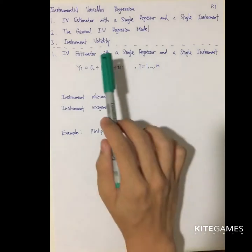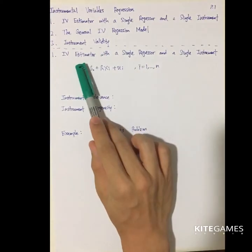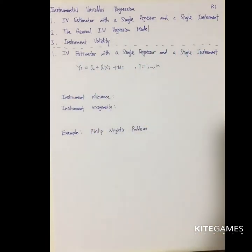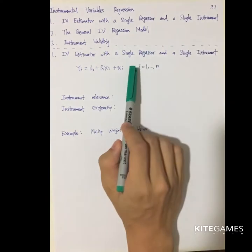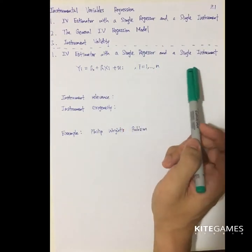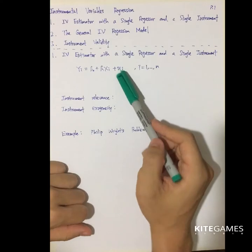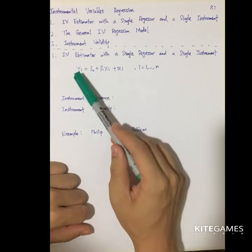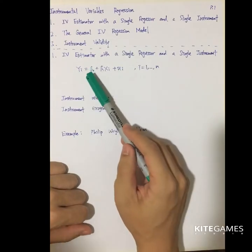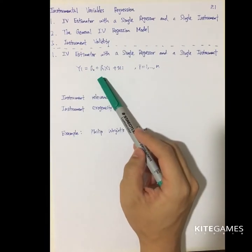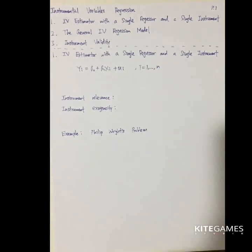Let's start by talking about the meaning of the IV Estimator. For simplicity, let's take a look at the one regressor and one instrument case. In the past, you may have learned this linear regression model: Y_i equals beta_0 plus beta_1 X_i plus u_i, where i equals 1, 2, ... up to n. But it may come across many problems.